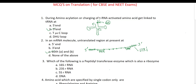Third question: which of the following is a peptidyl transferase enzyme that also acts as a ribozyme? The larger subunit of the ribosome — I have discussed the structure of ribosome in translation part 2. There is a peptidyl unit P site, and the peptidyl transferase enzyme is present there. It is made up of 23S ribosomal RNA. It functions as a ribozyme and helps in forming the peptide bond between two amino acids. So 23S ribosomal RNA functions as a ribozyme and is also known as peptidyl transferase.